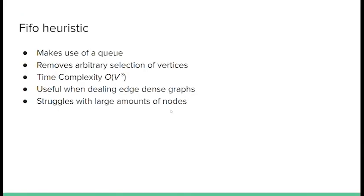Now we're going to talk about the FIFO heuristic. This heuristic makes use of a queue in terms of selecting the vertices to dispose of next. This is actually what we used in our walkthrough, because it's the easiest to visually represent and understand. This specific heuristic has a time complexity of O(V³). This is not ideal in general, but for edge-dense graphs it actually performs quite well. When there are lower amounts of vertices and lots of edges, like in a complete graph, this is where this heuristic really shines. However, for graphs with large amounts of nodes, it becomes progressively harder to find a solution efficiently.